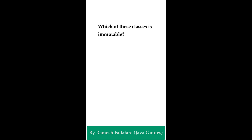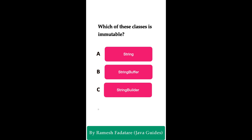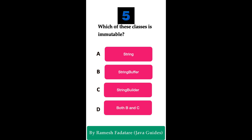Welcome to Java quiz series. Here is one more question: Which of these classes is immutable in Java? Option A: String. Option B: StringBuffer. Option C: StringBuilder. Option D: both B and C. The correct answer is option A: String. In Java, String objects are immutable, meaning once a String object is created, its value cannot be changed.